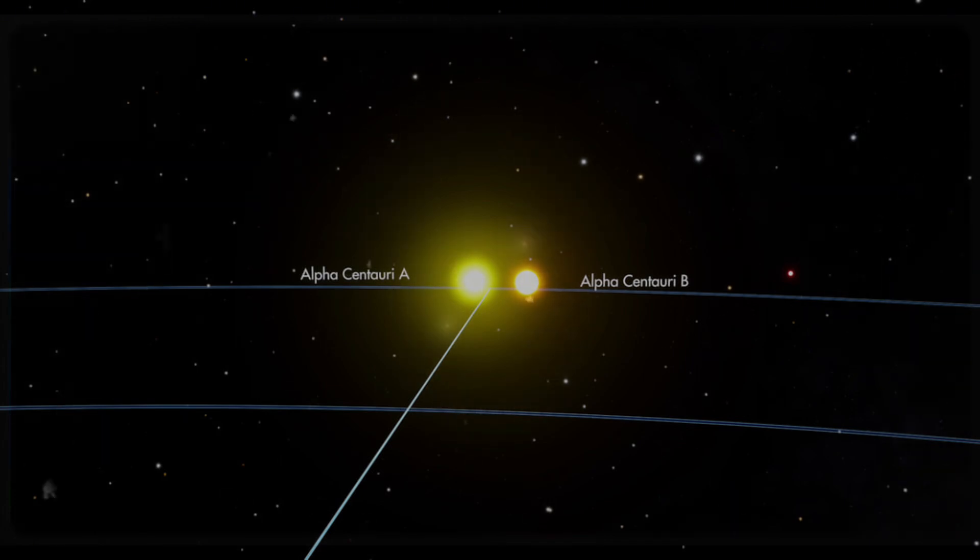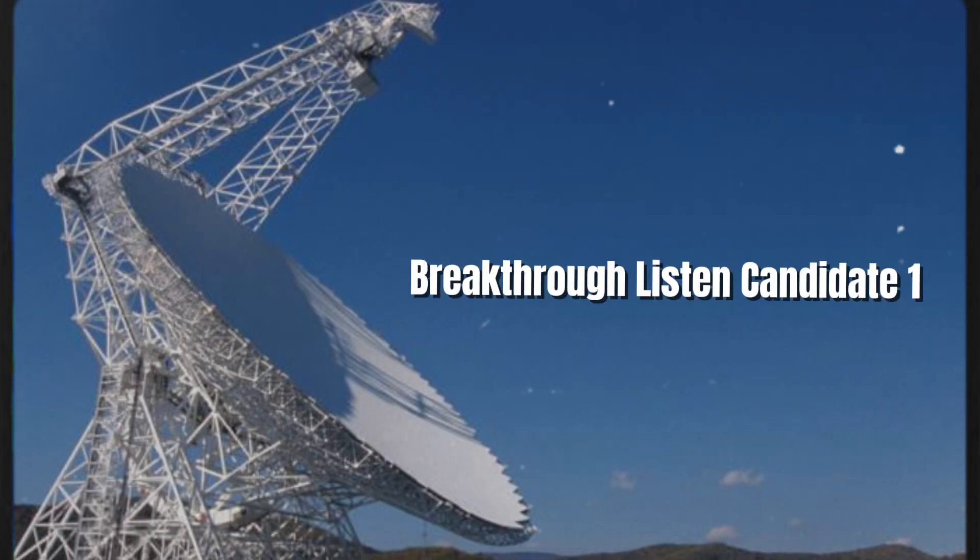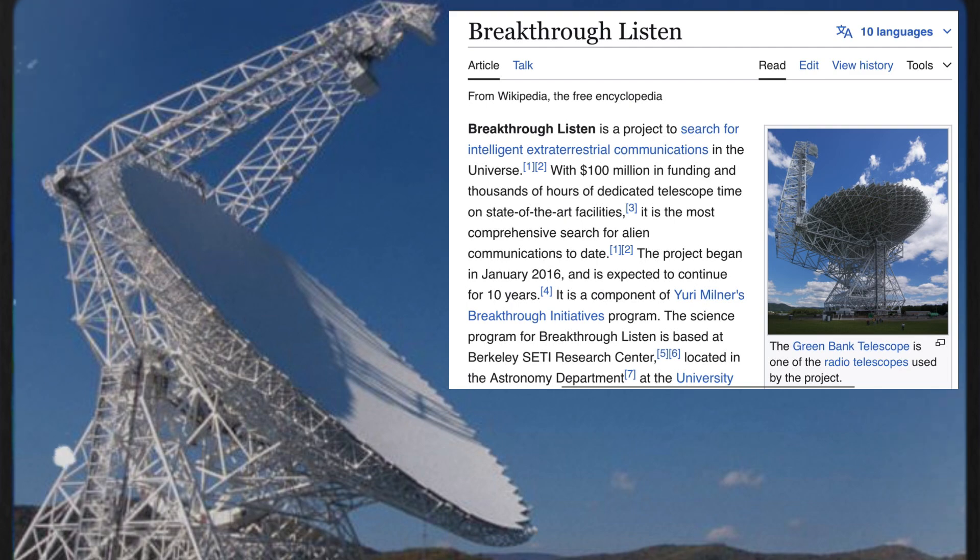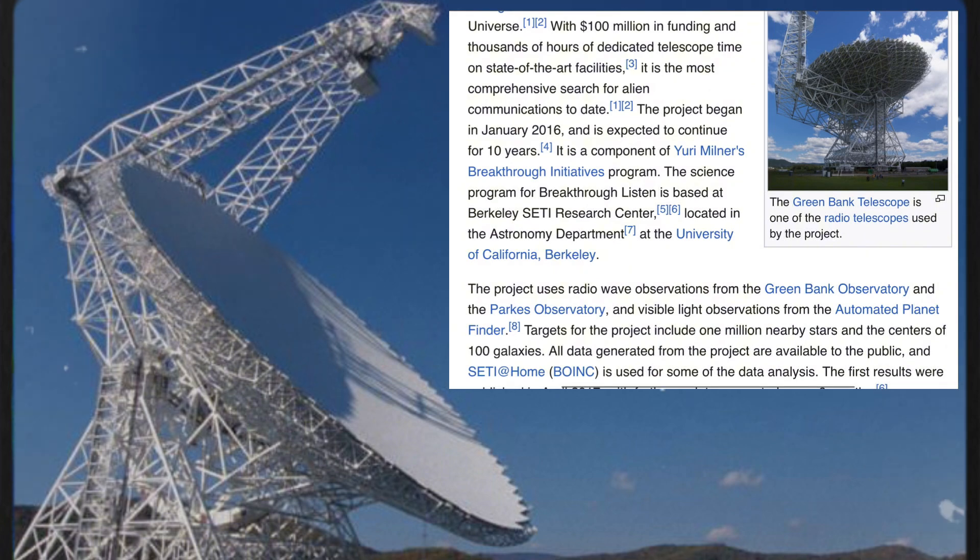But from which of these stars did the signal come, and what could have caused it? The signal, called Breakthrough Listen Candidate 1, was discovered by the Breakthrough Listen Project. This initiative was established to search for extraterrestrial communication from intelligent life and has received about $100 million in funding.